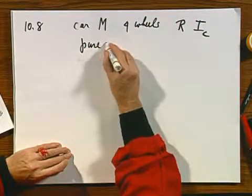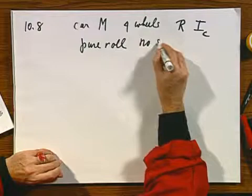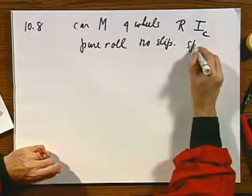And we have pure roll, that's a given, so there is no slip. That's a given at this moment. And the speed is constant.